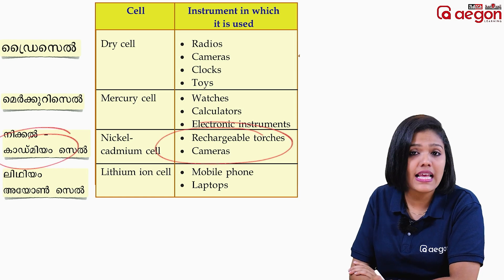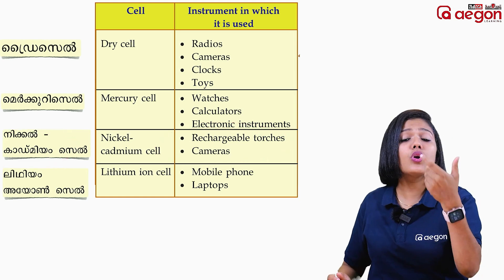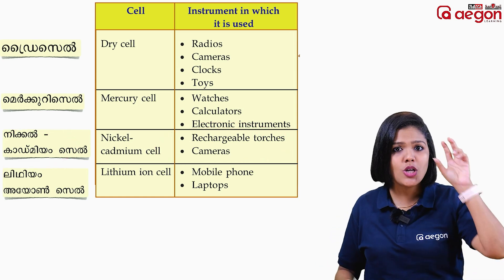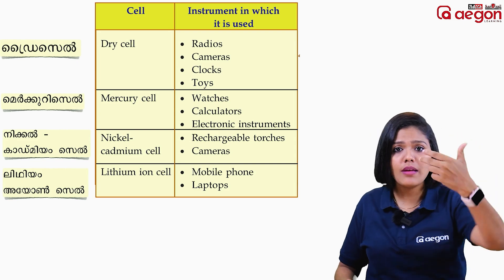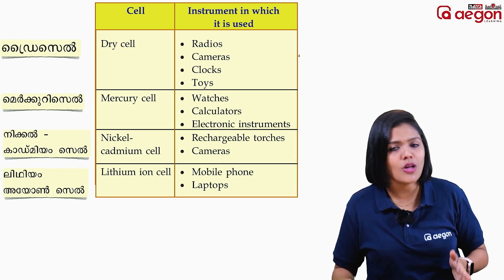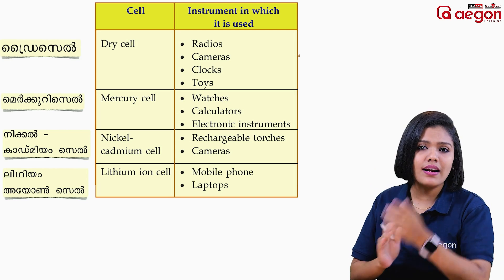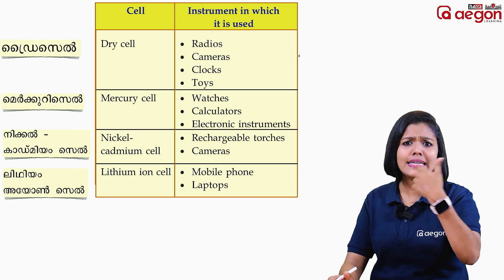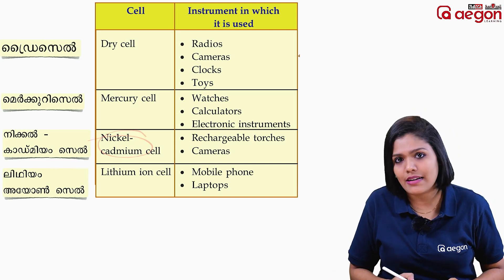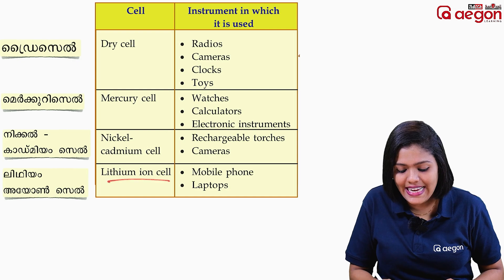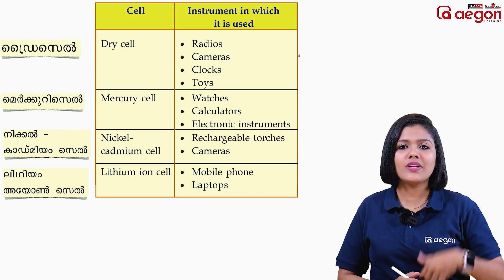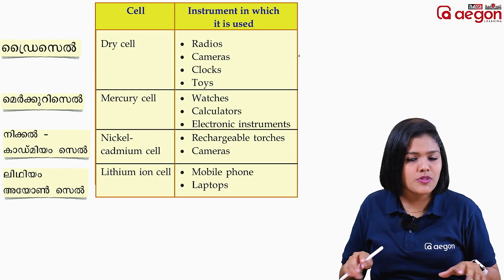The nickel-cadmium cell is used in rechargeable torches. In those torches and other cameras — in DSLR cameras — we use the nickel-cadmium cell. The lithium-ion cell is used in mobile phones and laptops.